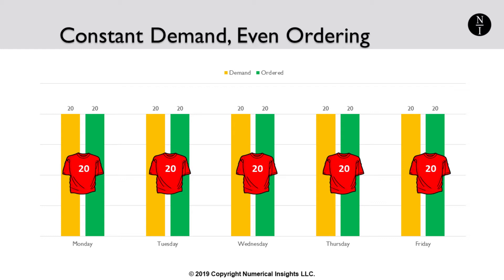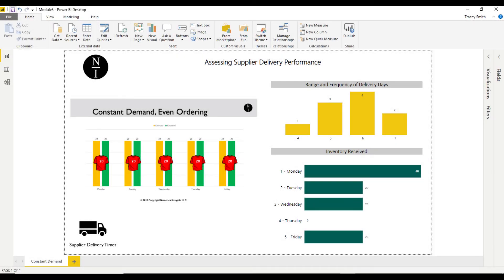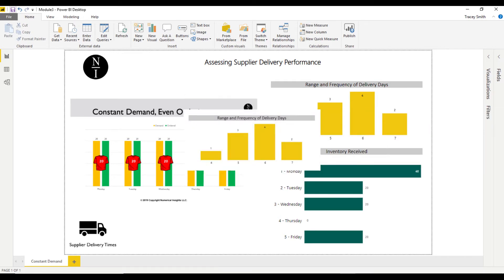You and your supplier are open for business from Monday to Friday. You decide to order 10 shirts each morning and 10 each afternoon to meet your constant demand of 20. Your supplier has a daily truck that picks up orders at 3 p.m. and delivers in exactly 4 days. What you order in the morning ships out on the same day, and what you order in the afternoon ships out the next day. Here's what your inventory arrivals and delivery times will look like — inventory arrivals are not equal each day. You receive no shipments on Thursdays, and delivery times actually range from 4 to 7 days.